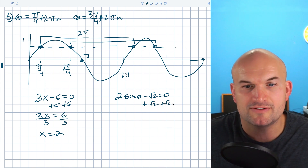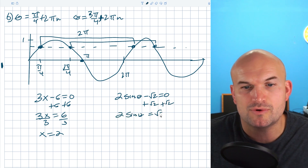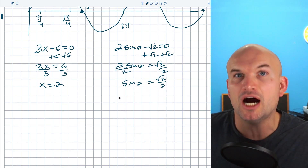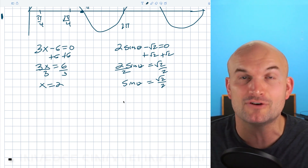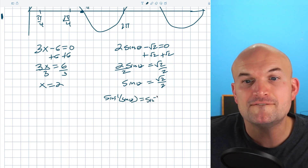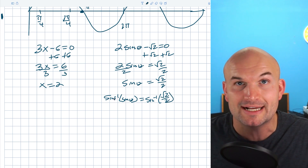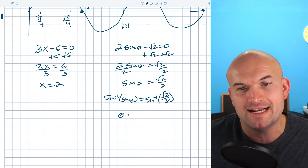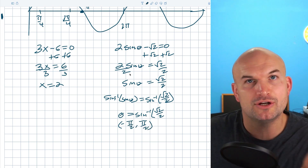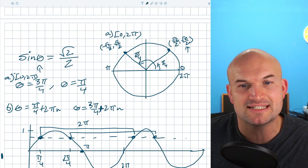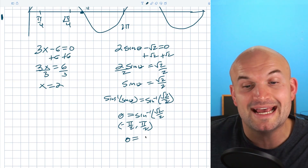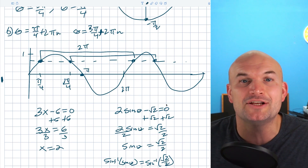They're so used to using inverse operations they say: to solve for theta, I need to undo sine. So they take the inverse sine of both sides. But it's really important to recognize that inverse sine is actually a function, and we had to apply a restriction on it for it to work. That restriction means theta = sin⁻¹(√2/2), but it has to fall within the restriction of −π/2 to π/2. Going back to the unit circle, the only solution satisfying that restriction is π/4. But while that satisfies the equation, it is not the full answer.